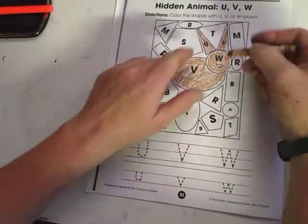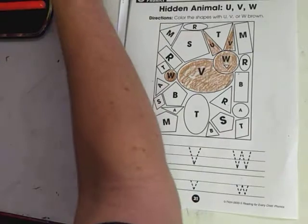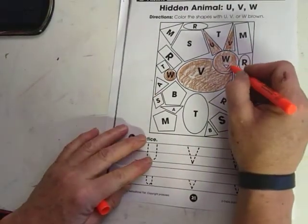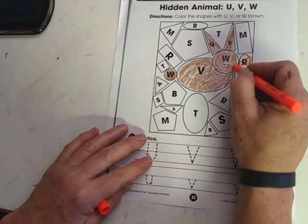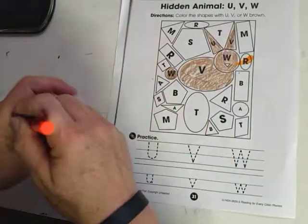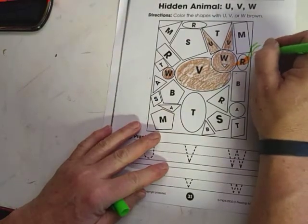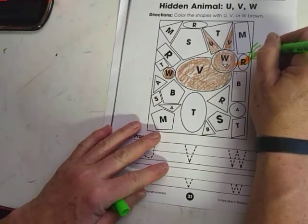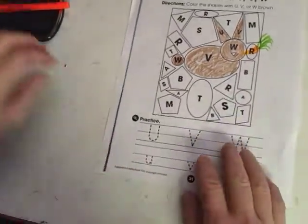Maybe a mouse, but I think the big pointy ears makes it a rabbit. He needs, you know what he needs? He needs a great big carrot in his mouth. There, now he looks like a rabbit chewing on a carrot.